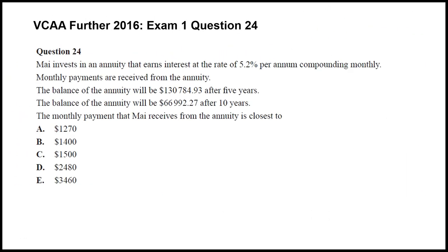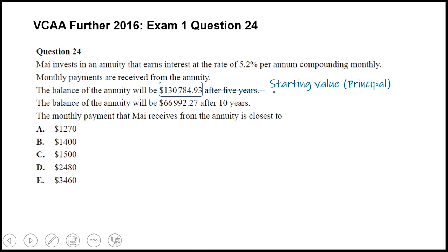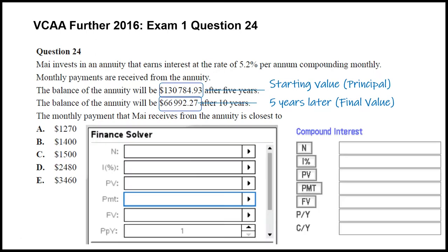Exam 1 question 24 was the last question in the finance module of exam 1. It's about an annuity. We're given an interest rate, we're compounding monthly, and we're given the balance after five years and another balance after 10 years. From that we need to find what is the monthly payment received. The tricky thing is that we're given these 5-year and 10-year amounts, but what we need for our finance solver is a principal value - a starting amount and then a final value. So let's let this 5-year amount be the starting value, the principal, and then the 10-year amount can be the final value after another 5 years.